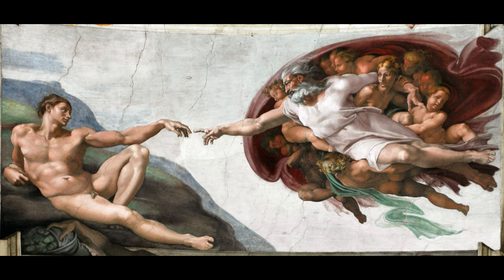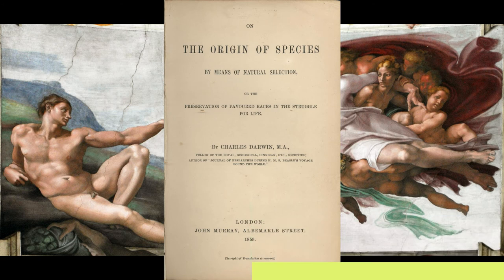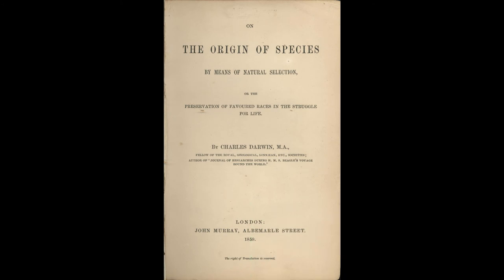En el contexto del siglo XIX, las ideas de Darwin eran contrarias al paradigma teológico creacionista aún vigente. Es por ello que Darwin demoró más de 20 años en presentar sus resultados, puesto que quería ejemplificar con un número suficiente de casos sus ideas, al saber de antemano que no serían bien recibidas por la comunidad científica. En 1859, Darwin publica El origen de las especies, un hito revolucionario de la ciencia.